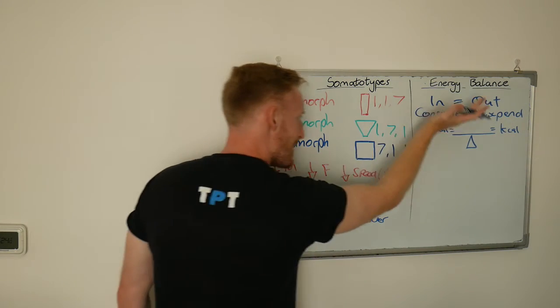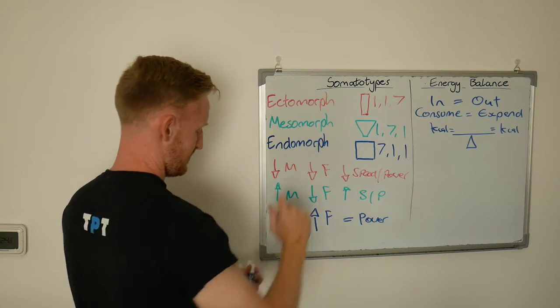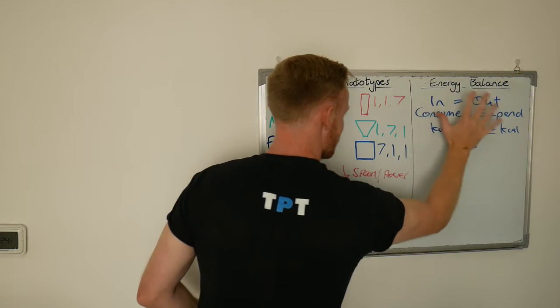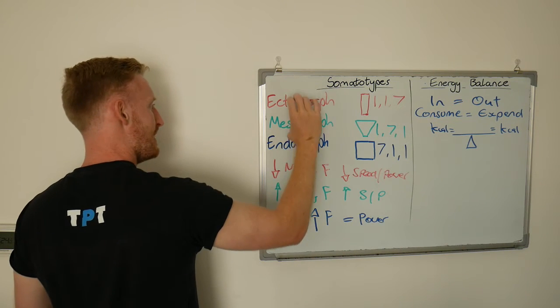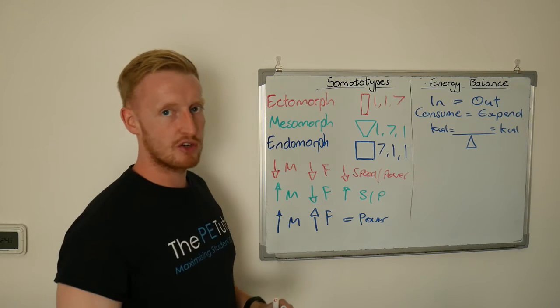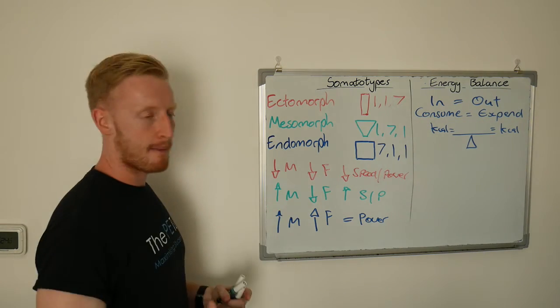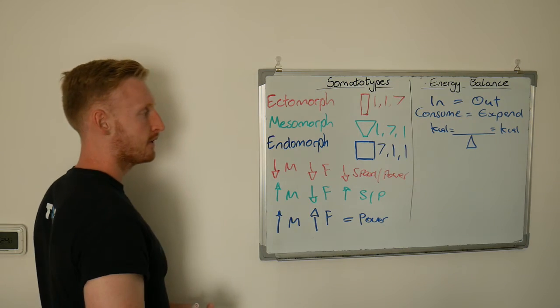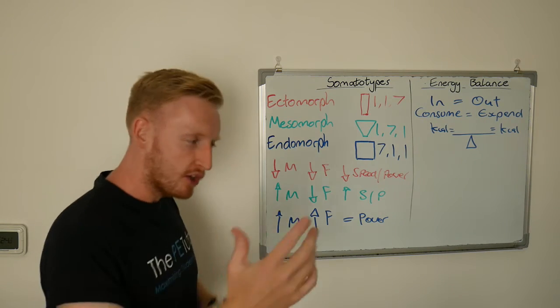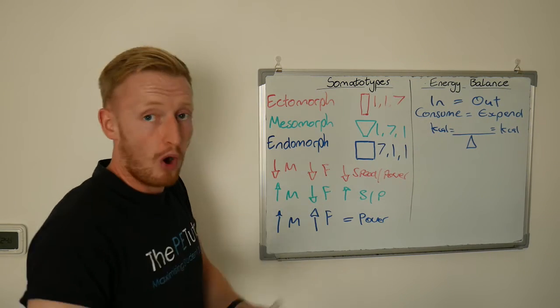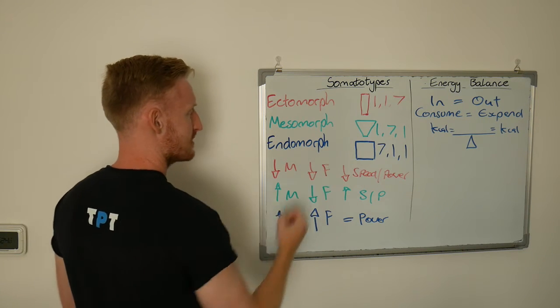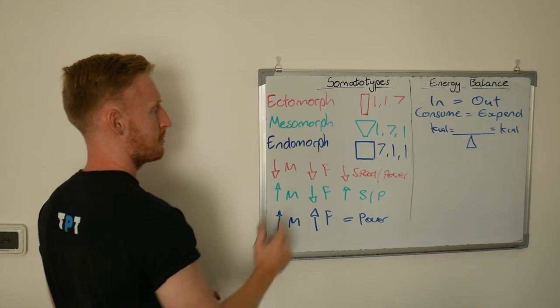But if we tilt this in either way we get a change. So in this scenario, if someone appears to be one of these, then we are less likely to see them change. If someone has got high fat mass and they appear to be an endomorph and they remain in energy balance, they are likely to stay that shape. They might change a little bit with some muscle hypertrophy. But if their energy in and out stays the same, they are largely going to stay the same on their somatotype as well.